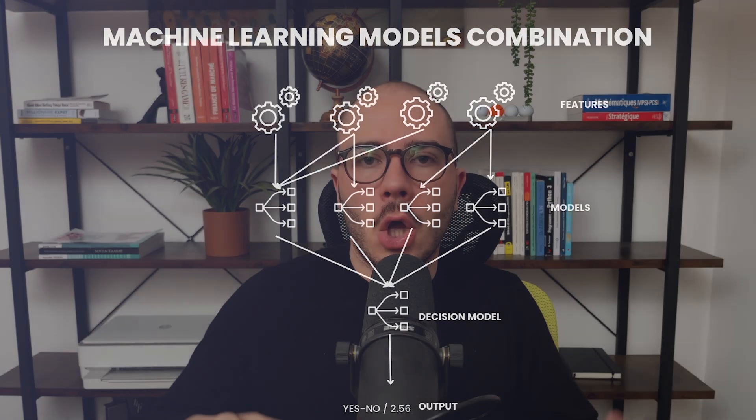Another approach when combining models is to average predictions or, for classification, use a voting method — for example, if you have 10 models and 8 vote for a buy position, you take a buy position. You can also create a meta-model that uses only the predictions of the other models as its features, with the real target as output. There are many different ways to use machine learning to create trading strategies — this was just a quick overview. Check out the AlphaQuant program for a deeper guide, and feel free to drop any questions in the comments. See you in the next video.